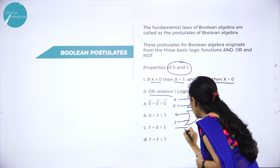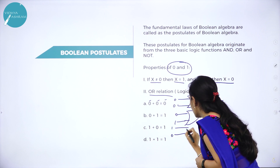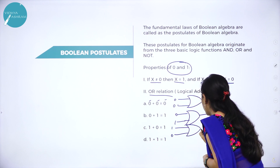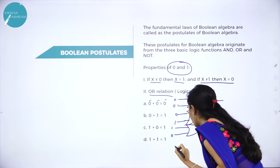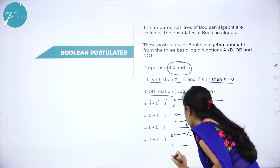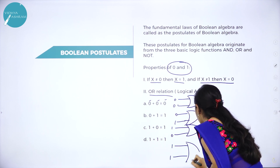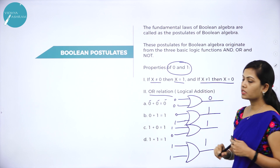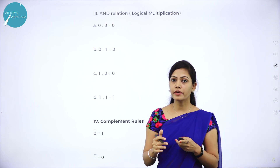Next, 1 and 0: logical symbol for 1 plus 0 is 1. And logical symbol for 1 and 1: 1 plus 1 is 1. This is the second Boolean postulate.